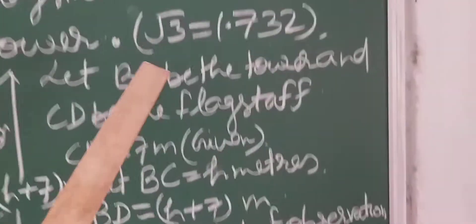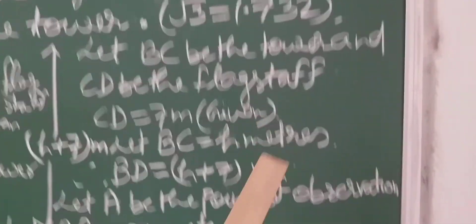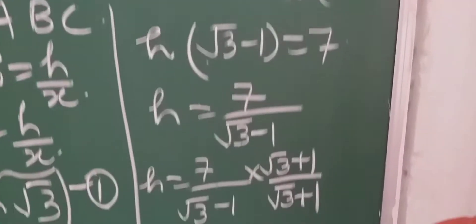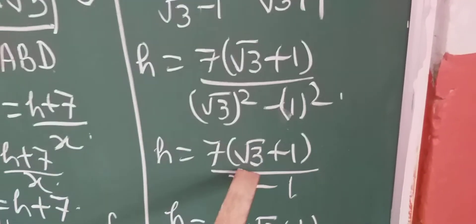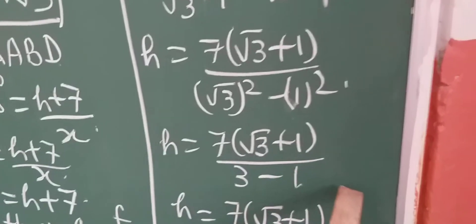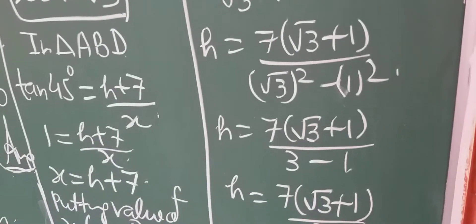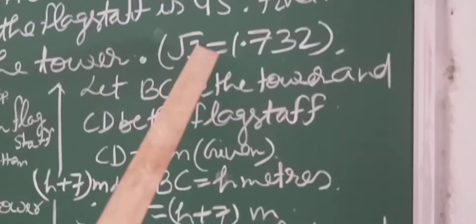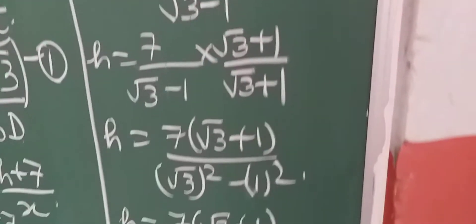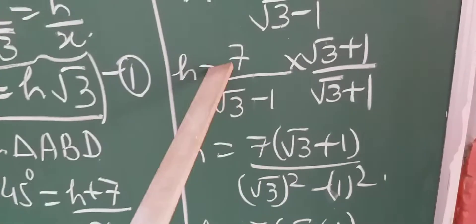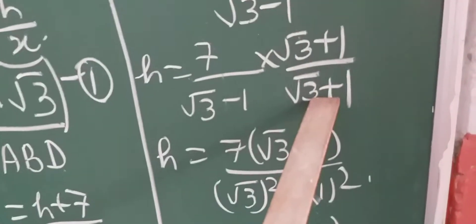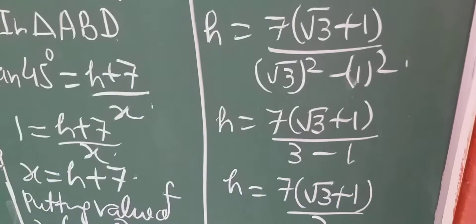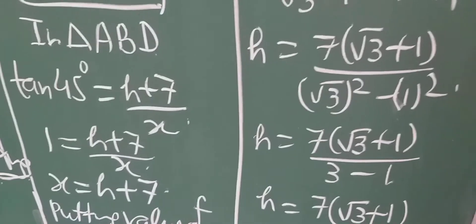Students, here the value of root 3 is given to us, that's why we used it. If the value of root 3 is not given to us, we can leave the answer as h equals 7(root 3 plus 1) upon 2 meter after rationalizing. But when the value of root 3 is given, we must substitute it. Always remember: don't put the value of root 3 in the denominator first — rationalize the denominator first, then put the value of root 3. That way the calculation will be easy.